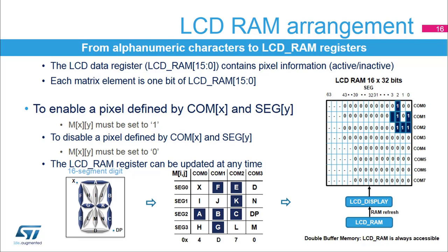For example, to enable pixel A connected to SEG2 and COM0, M20 must be set to 1. As a result, bit 2 of COM0 in the LCD RAM register is set to 1. Thanks to the double buffer memory feature, the LCD RAM register can be updated at any time by the application without affecting the integrity of the data displayed and without having to use interrupts to control display modifications. The application software can access the first buffer level (LCD RAM), and once its content is modified, it requests the updated information to be moved into the second buffer level (LCD display). This operation is done synchronously with the beginning of the next frame.